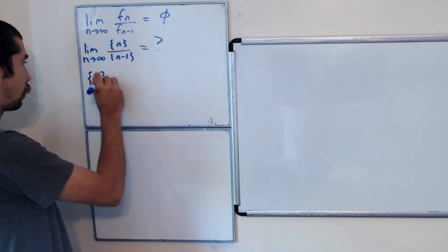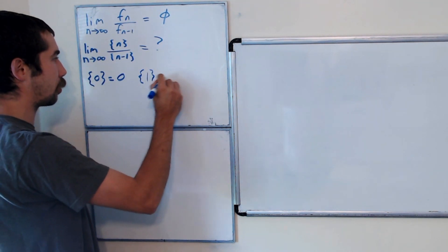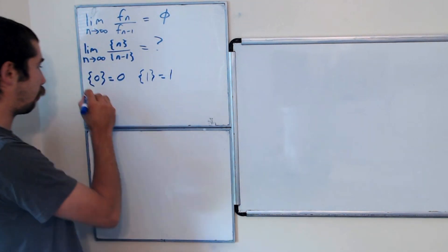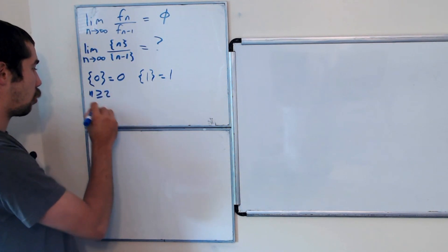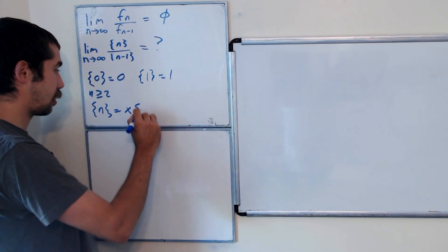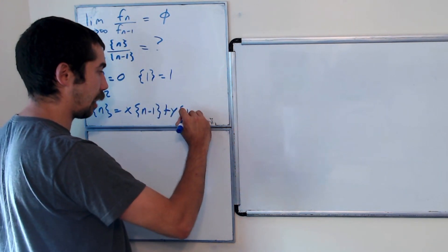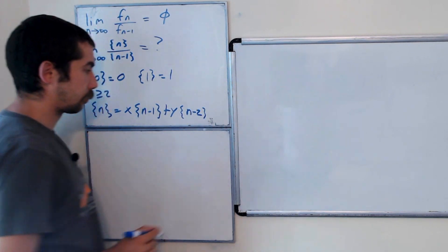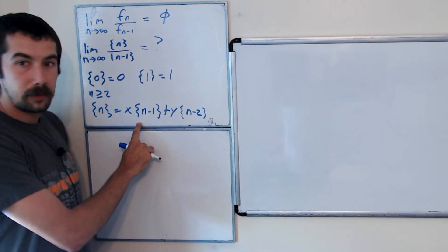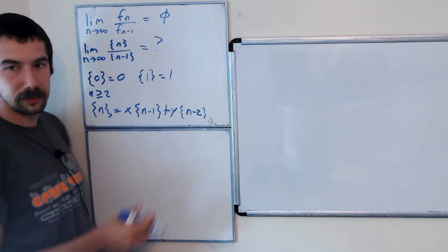The 0th Lucas polynomial is 0. The first Lucas polynomial is 1. And then for n greater than or equal to 2, we had the nth Lucas polynomial was equal to x times the n-1st plus y times the n-2nd. And so if we plugged in x equals 1 and y equals 1, we get exactly the Fibonacci numbers.